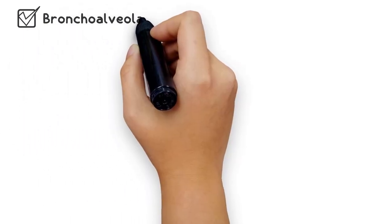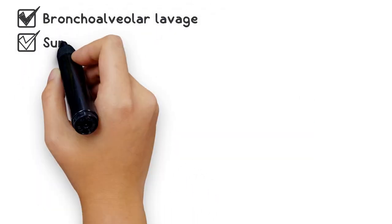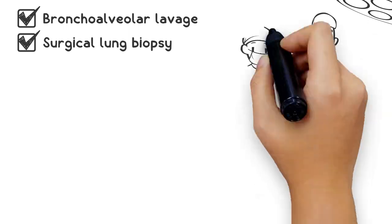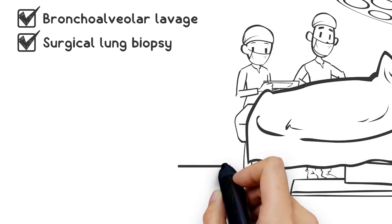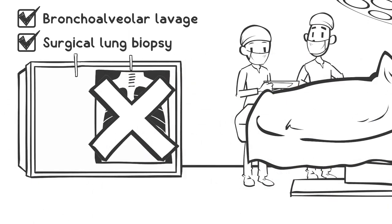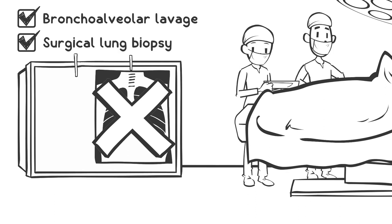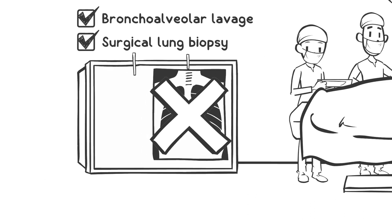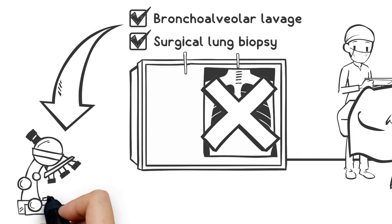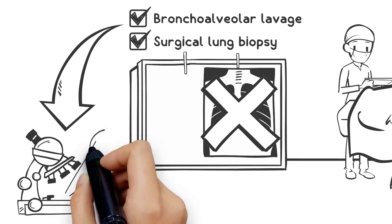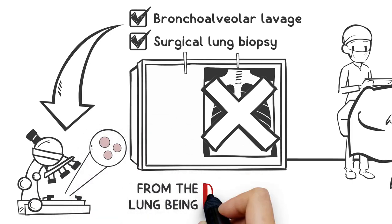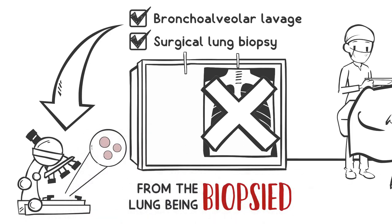Bronchoalveolar lavage and surgical lung biopsy are indicated in certain patients when a UIP pattern is not found on high-resolution CT scans. If a surgical lung biopsy is performed, it is important to get multiple biopsy samples from the lung being biopsied.